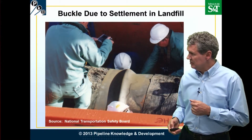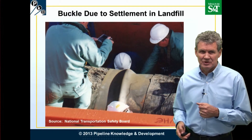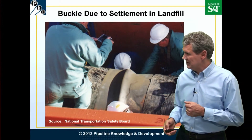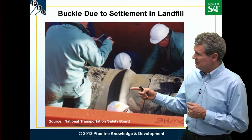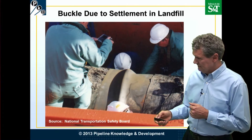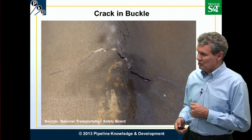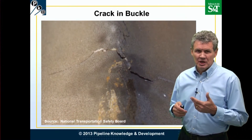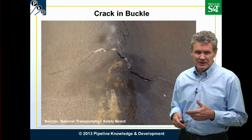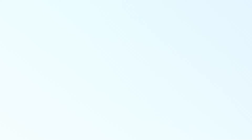Here is a buckle that came due to settlement in a landfill. You can see they're going back and working on it — the buckle is very pronounced right there. And there's also a crack in the buckle. So these are examples of natural causes of pipeline failures.